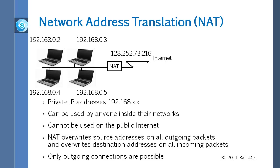Why was 192.168 specifically chosen? They could have chosen other numbers, but those numbers happened to be available at the time and not assigned to anyone. For example, 128.252 was assigned to WashU, so making it private would force WashU to give up all its addresses. This is also not the only private address — there are three private address ranges: 192.168, 172.something, and one more.